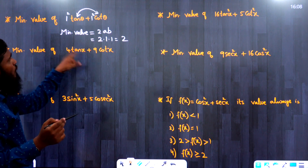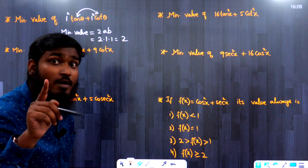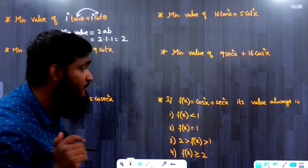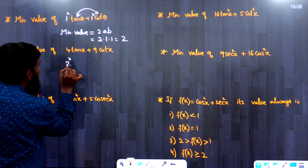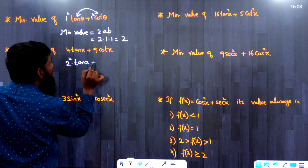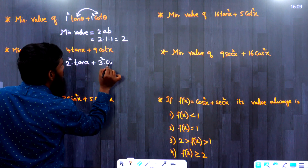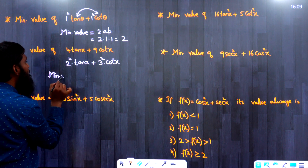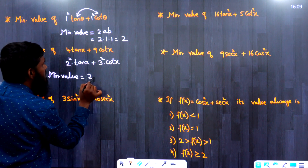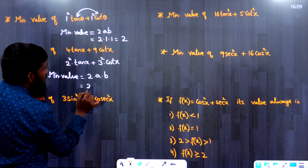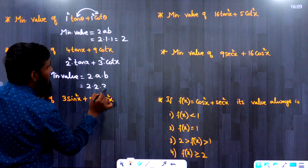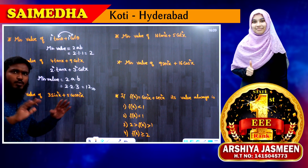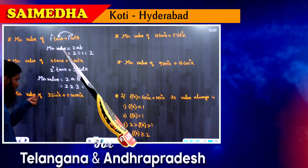Next question: minimum value of 4 tan x + 9 cot x. The coefficients must be expressed as perfect squares: 4 = 2², so a = 2; 9 = 3², so b = 3. Minimum value = 2ab = 2 × 2 × 3 = 12.